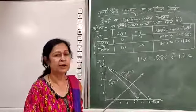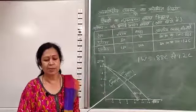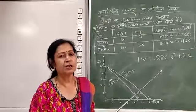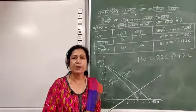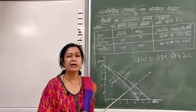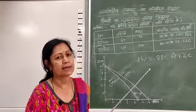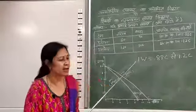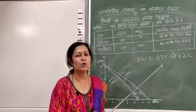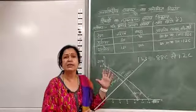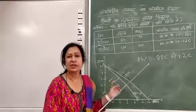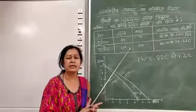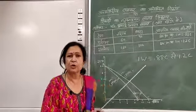इसी तरह श्रम की कैान समरूप नहीं होती, श्रम बाजार में पूर्ण प्रतियोगिता की स्थिति नहीं होती और इसलिए सब जगह श्रम की कीमत समान नहीं रहती है। स्वतन्त्र व्यापार की जो कल्पना की गई है वो अधिकतर व्यावहारिक जगत में पूरी नहीं होती — सभी देश कई प्रकार के प्रतिबन्ध लगाते हैं जिनसे स्वतन्त्र व्यापार निर्बाध रूप से सम्पन्न नहीं हो पाता। इस सारे सिद्धान्त में केवल लागत पक्ष — अर्थात पूर्ति पक्ष — पर जोर दिया गया है, माँग पक्ष की पूर्णतया उपेक्षा की गई है।